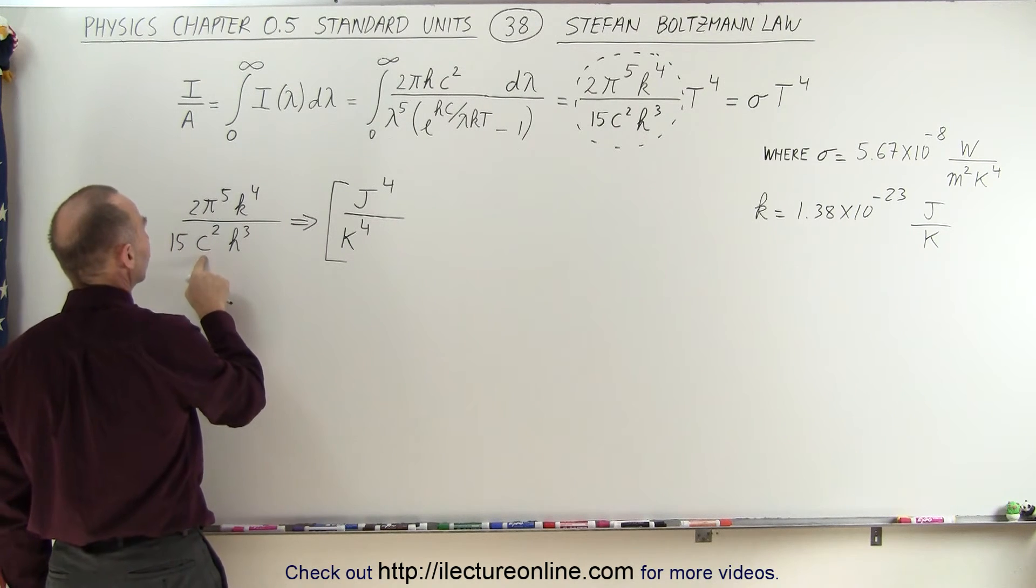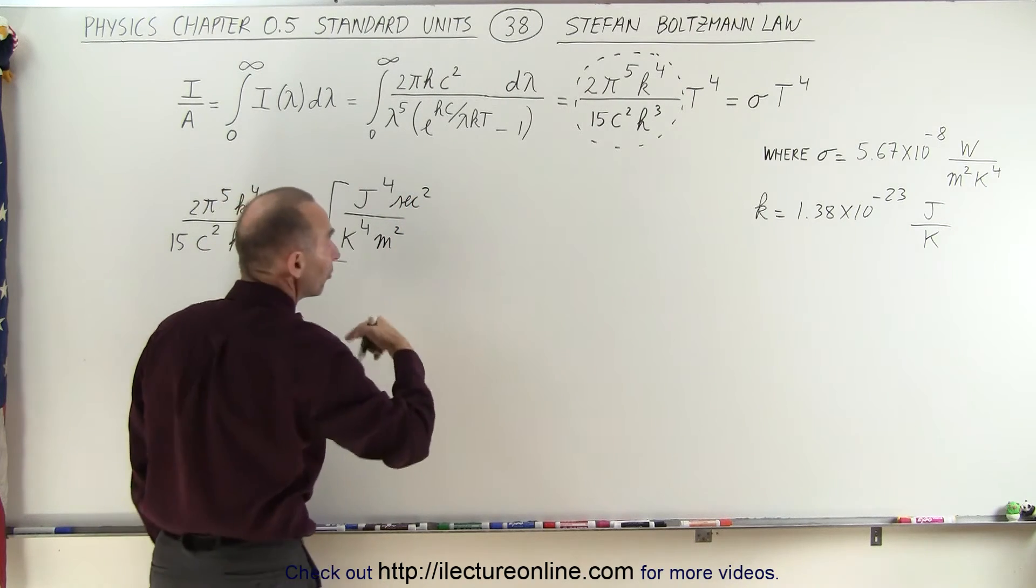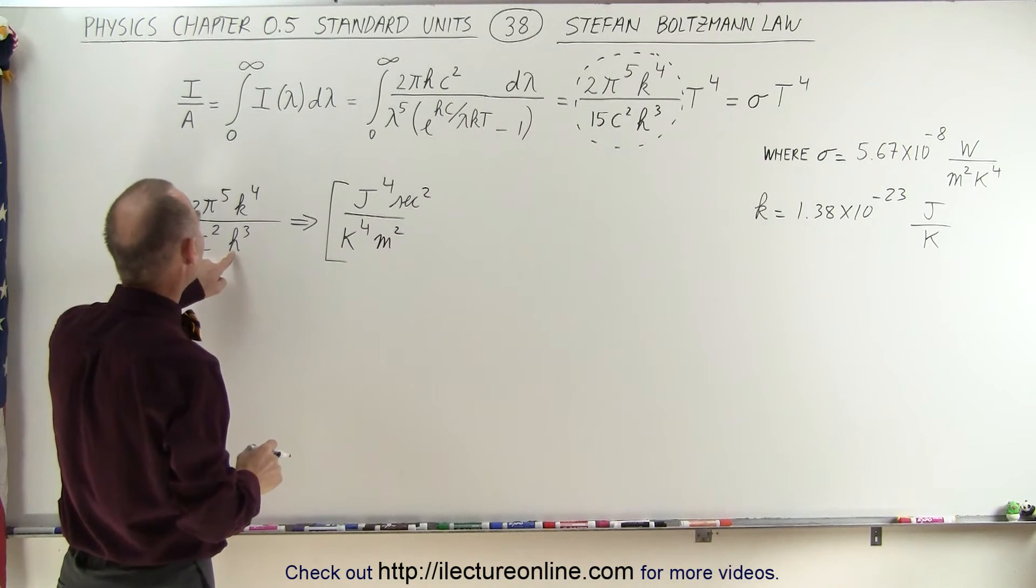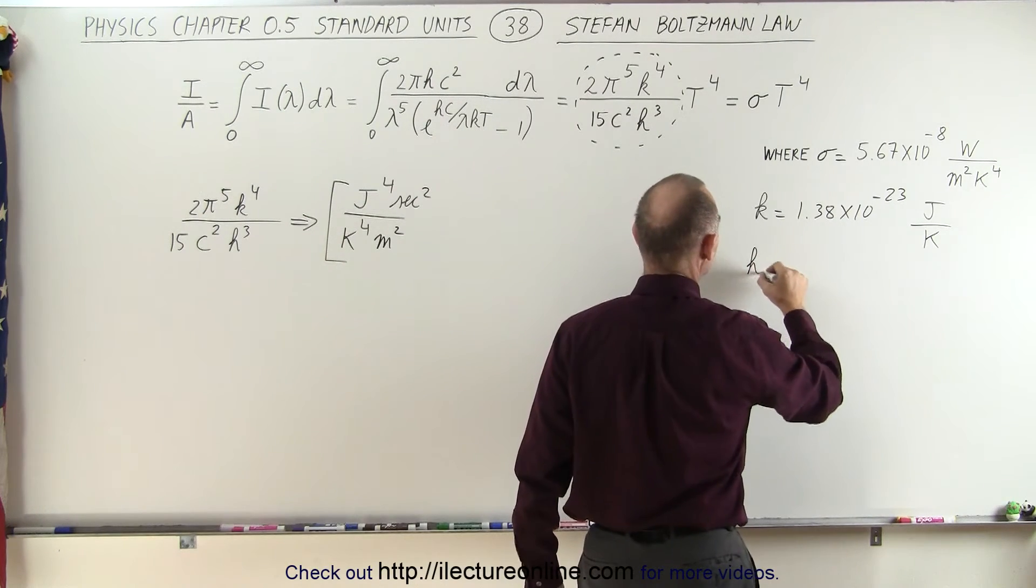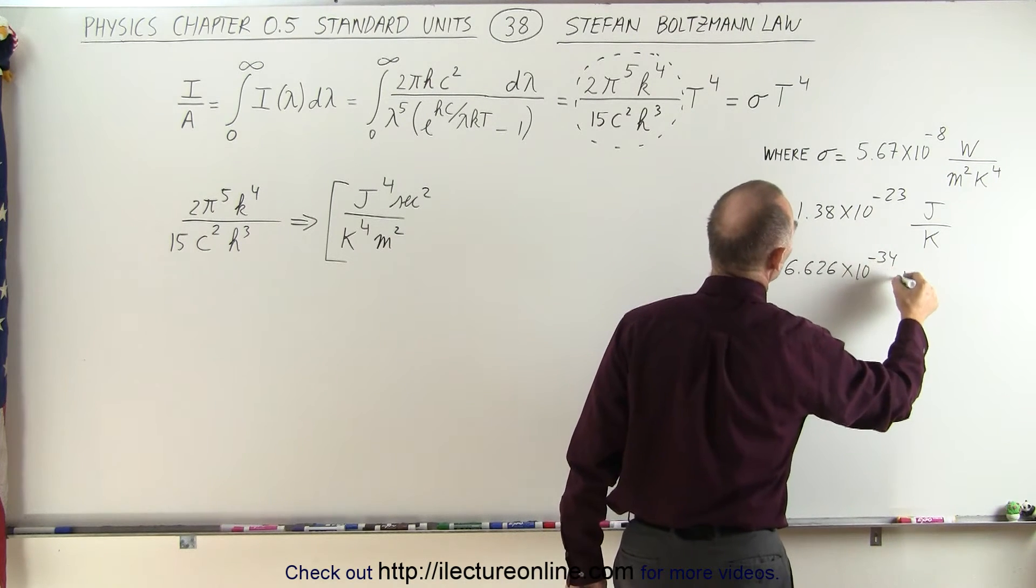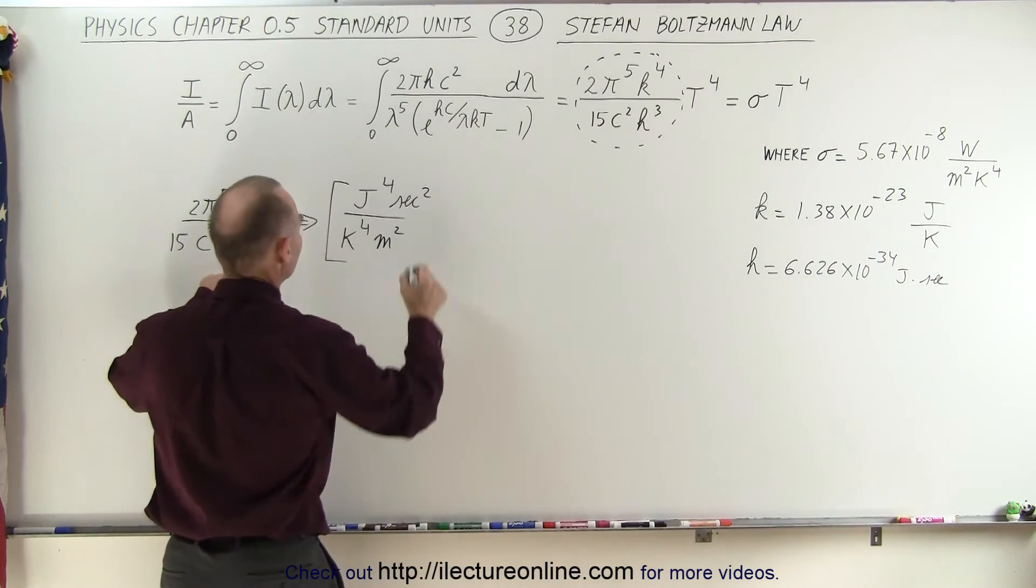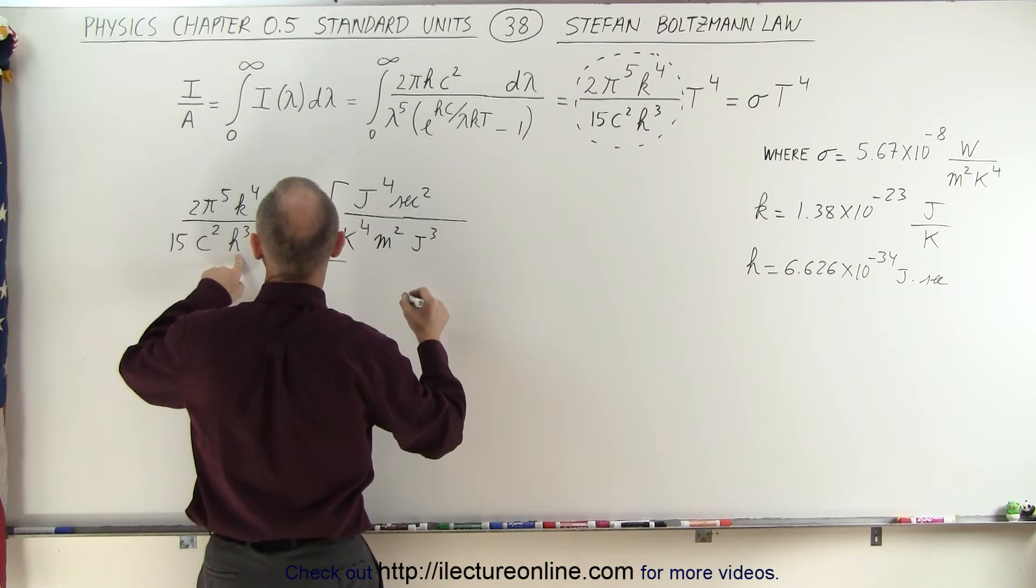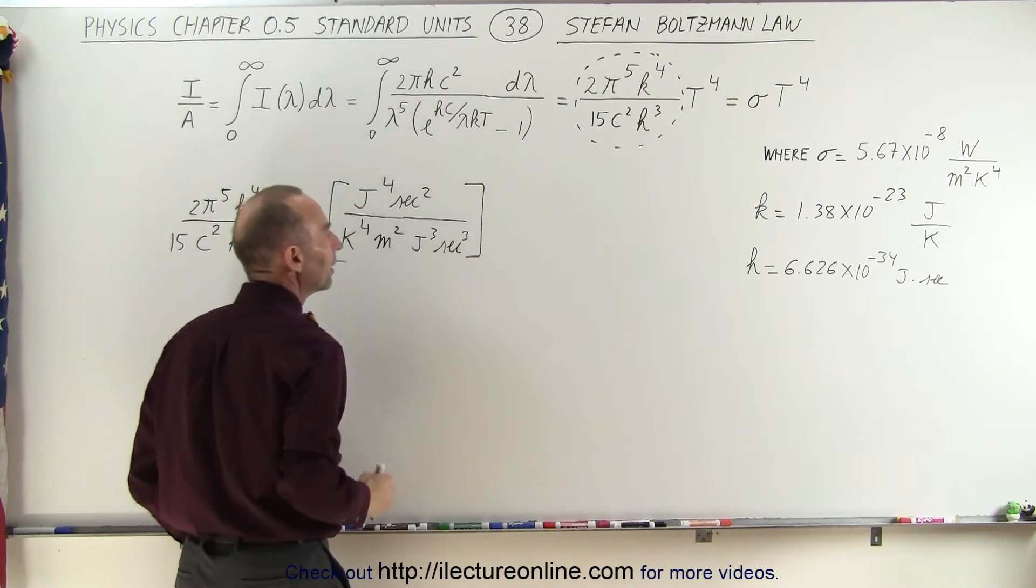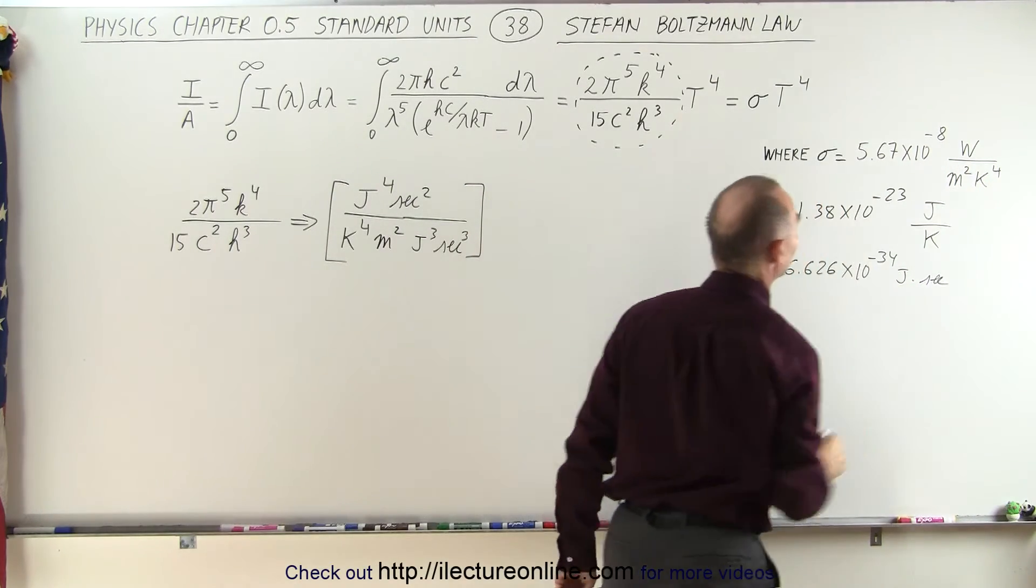In the denominator, we have the speed of light squared, which is meters squared per second squared, and since it's in the denominator, seconds squared goes to the numerator. Now we have h, well h is defined as 6.626 × 10^-34 joules times seconds, so let's plug that in. We have joules cubed in the denominator and seconds cubed in the denominator, and somehow that needs to converge to watts per square meter per Kelvin to the fourth power.